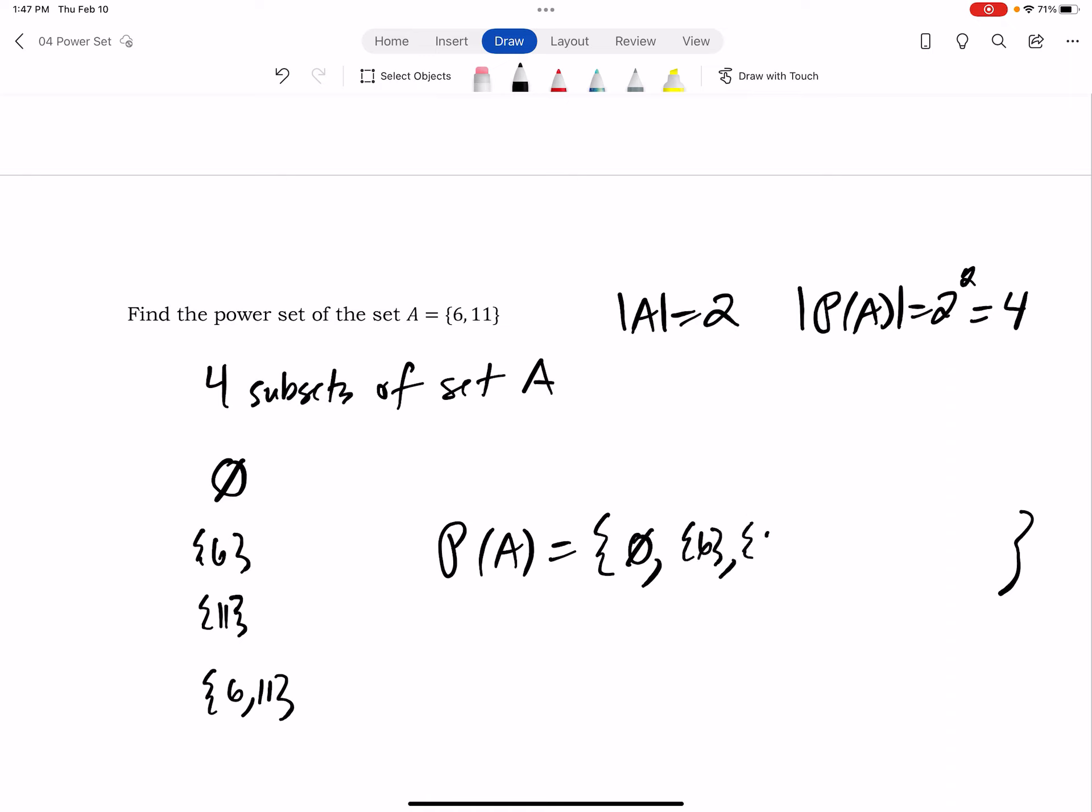So if I'm going to write the power set of A, I'm going to put a big curly braces. I'm going to list those four sets inside of there. And so there's my power set of set A.